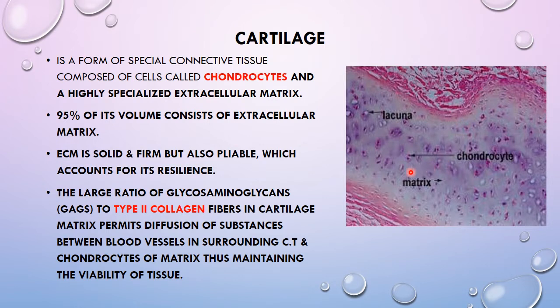Cartilage is a special form of connective tissue comprised of cells, extracellular matrix, and fibers, like any other type of connective tissue. In cartilage, the cells are called chondrocytes, the fibers are type 2 collagen fibers, and the matrix is a highly specialized matrix which forms 95 percent of the extracellular volume of the cartilage. It is firm and pliable, which accounts for its resilience.